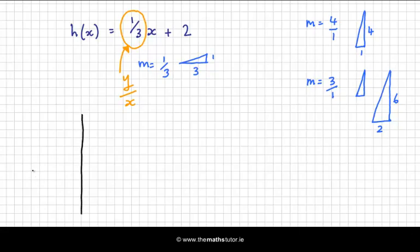So now we can plot this. We want to have a y-intercept as 2. So that's this point here. Let's label it (0, 2). And now we go across 3 and up 1. So 1, 2, 3 and up 1.